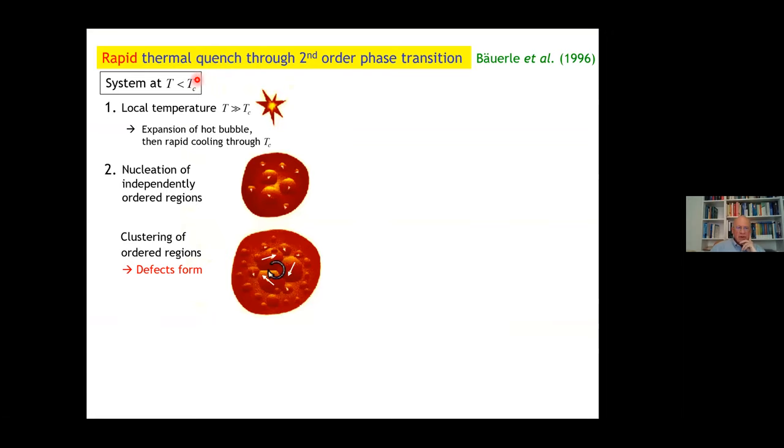What happens at a rapid thermal quench through a second-order phase transition? Let's consider a system below T_C in the symmetry broken state. Let's say we deposit some energy or heat up locally by depositing a particle or some reaction. Then the system heats up locally, a hot bubble develops, expands through entropic principle, then cools down again. As the bubble is large, it cools, and independently ordered regions will nucleate. These different regions, they are causally not connected, so they order in the direction they prefer.